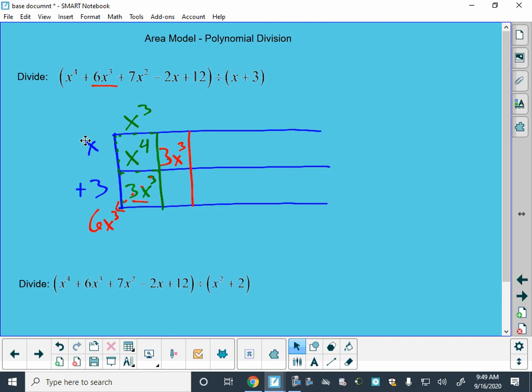But if that's a 3x cubed, and this is x tall, then this must be a 3x squared. And if that's a 3x squared, and this is 3 tall, then this must be a 9x squared.